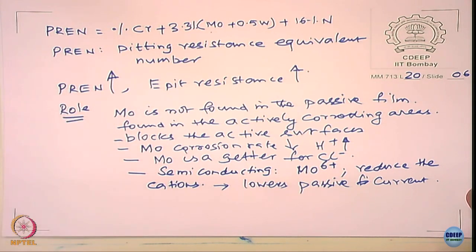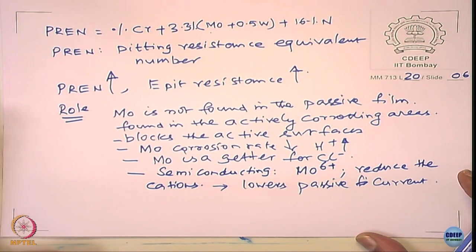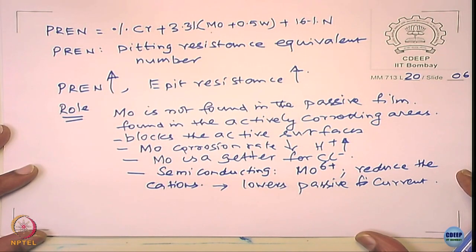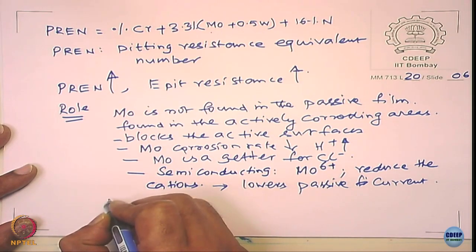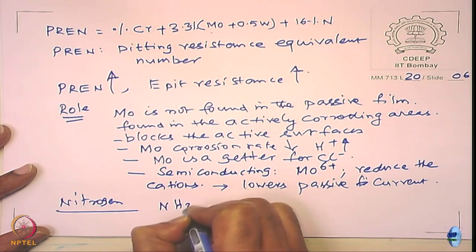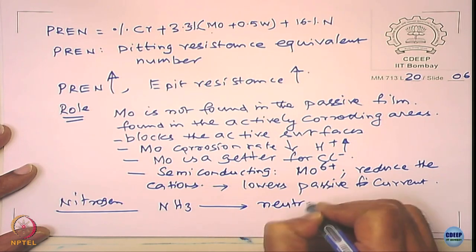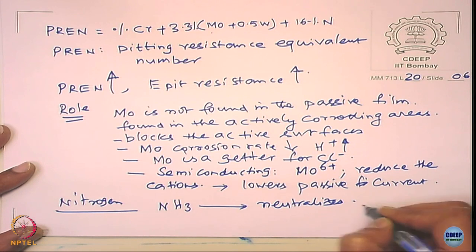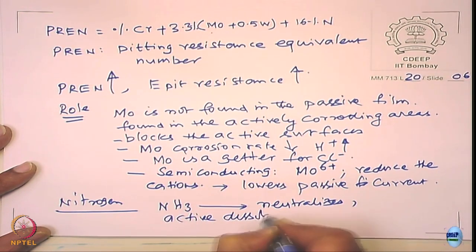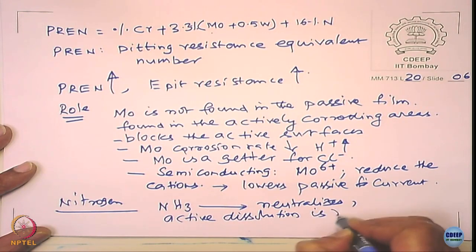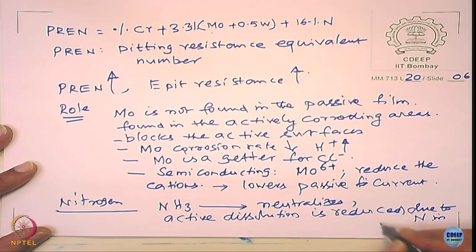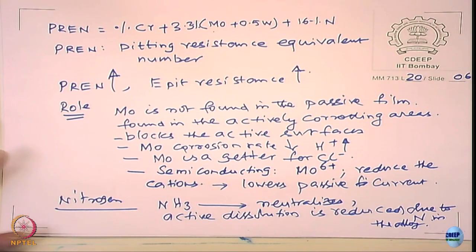For this course, we do not need to worry too much about detailed mechanisms — just an outline is okay. Nitrogen has a similar role; still not fully clear, but some people say it forms ammonia, neutralizing acidity. What we have seen is that active dissolution decreases due to nitrogen in the alloy.